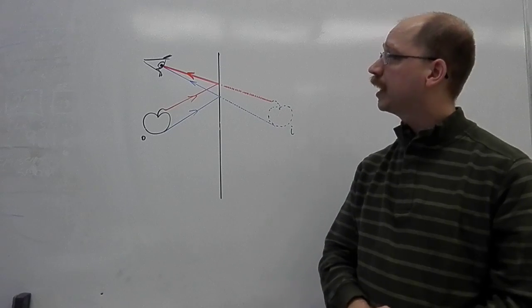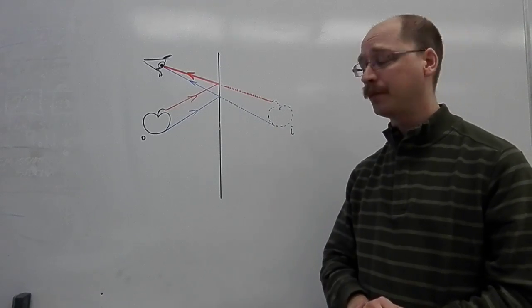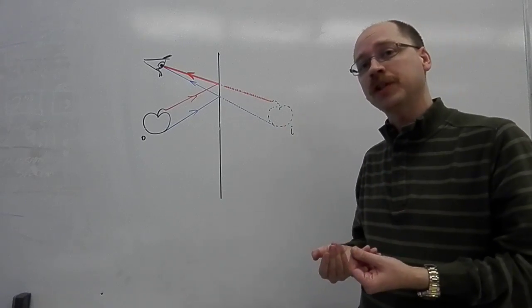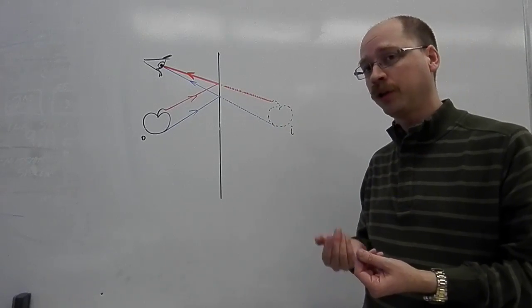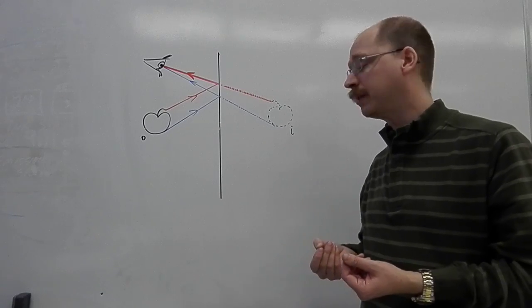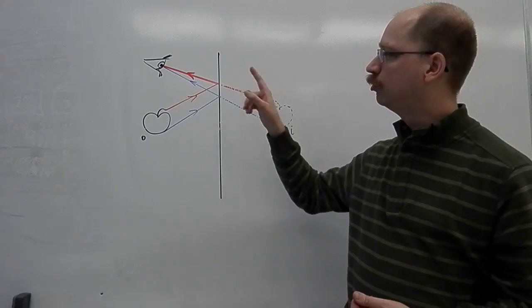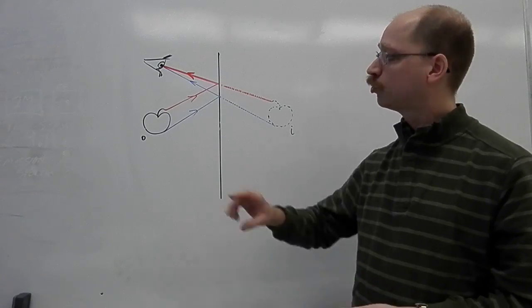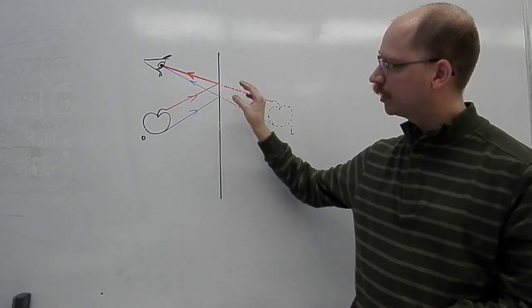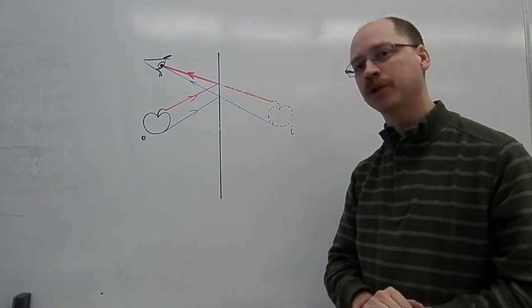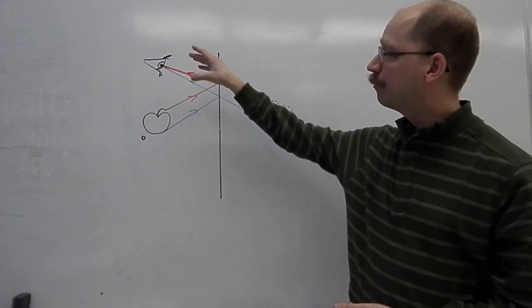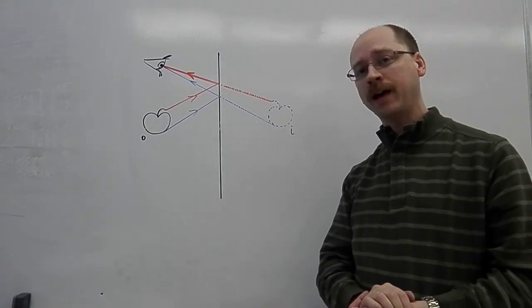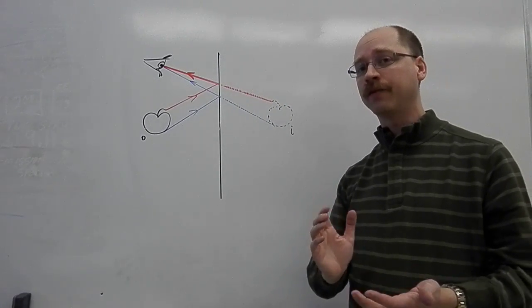So at this point, I would say that my plane mirror diagram is done. I've got the image that I drew in first as a dotted line, my virtual, erect, same-sized image. Then I drew two separate ray diagrams showing how rays of light were truly traveling from the object to hit the mirror to bounce up to the observer's eye in order to give me that perception of as though the light had come from behind the mirror and producing that image. Thank you very much. Bye-bye.